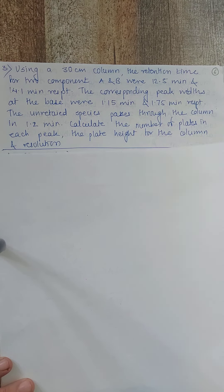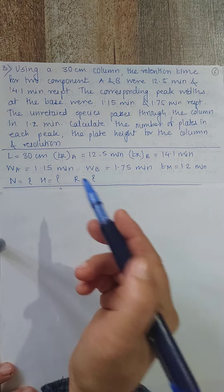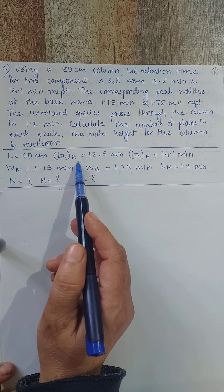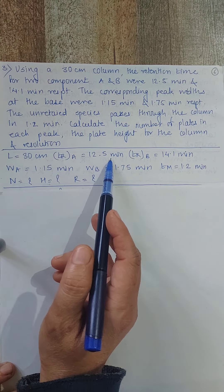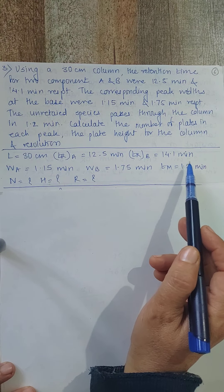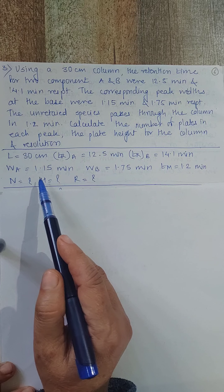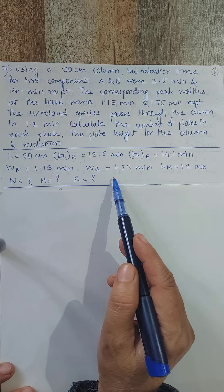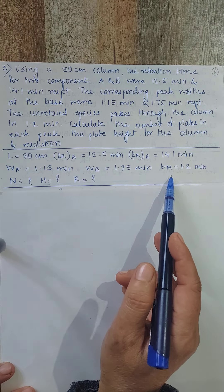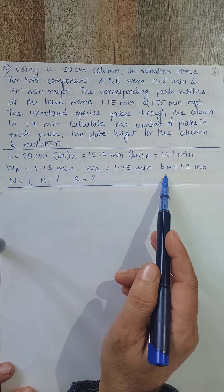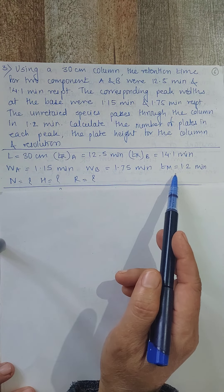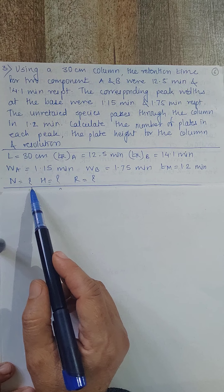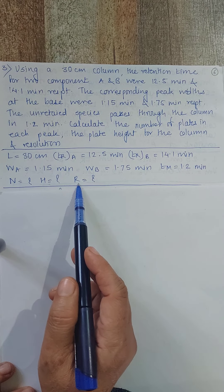Given data: L = 30 cm, TR(A) = 12.5 min, TR(B) = 14.1 min, WA = 1.15 min, WB = 1.75 min, TM = 1.2 min. Find N (number of plates), H (plate height), and R (resolution).